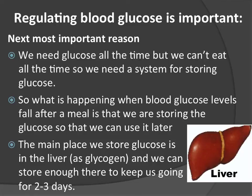Coming back to the reasons why regulating blood glucose is important: the most important reason is that tissues like the brain are so vitally dependent on glucose because they can't use other forms of energy. Next, we need glucose all the time, but we're not consuming food all day — we sleep at night and go for hours between meals. Therefore we need a system for storing the glucose we've consumed and releasing it at appropriate times to get a regular supply into our bloodstreams.